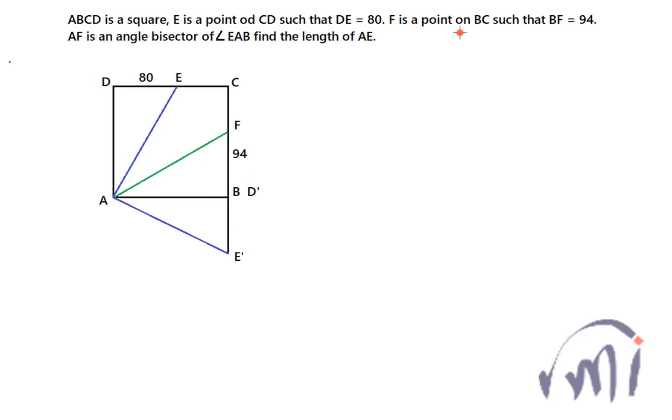It will look something like this where these two angles we know were equal. This was theta and this was also equal to theta. So if this angle is theta, ABF is a right angle triangle so this angle will actually be equal to 90 minus theta.